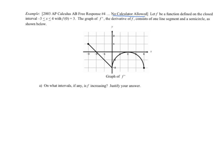I've stolen this from an old AP question. This is from 2003 AP Calculus AB, free response question 4. Question 4 means no calculator is allowed. It says let f be a function defined on the closed interval negative 3 to 4, with initial condition f(0) = 3. The graph of f prime, the derivative of f, consists of one line segment and a semicircle as shown below.